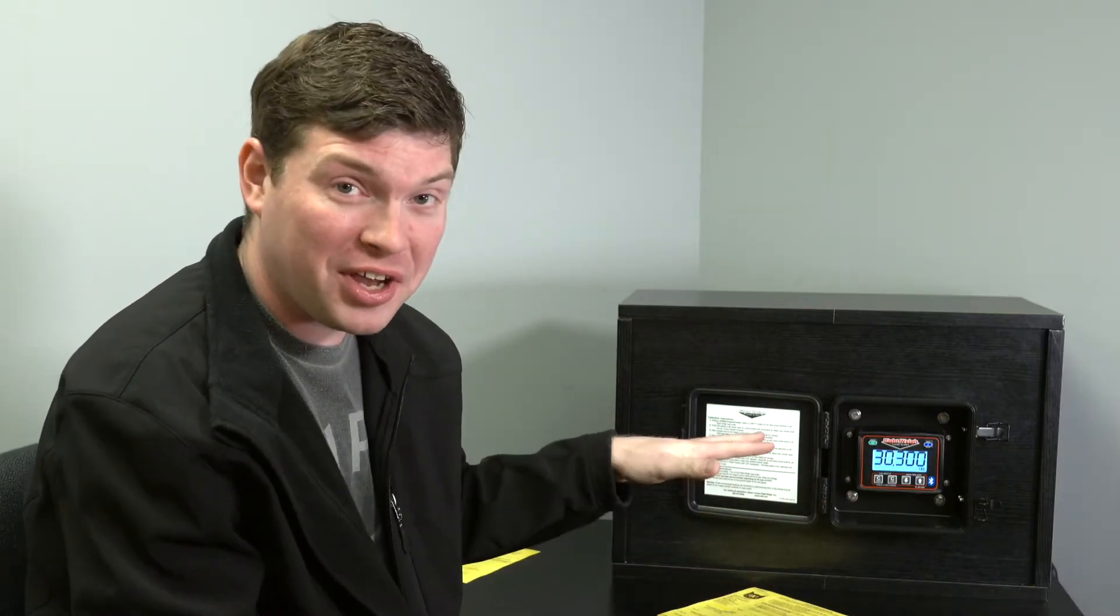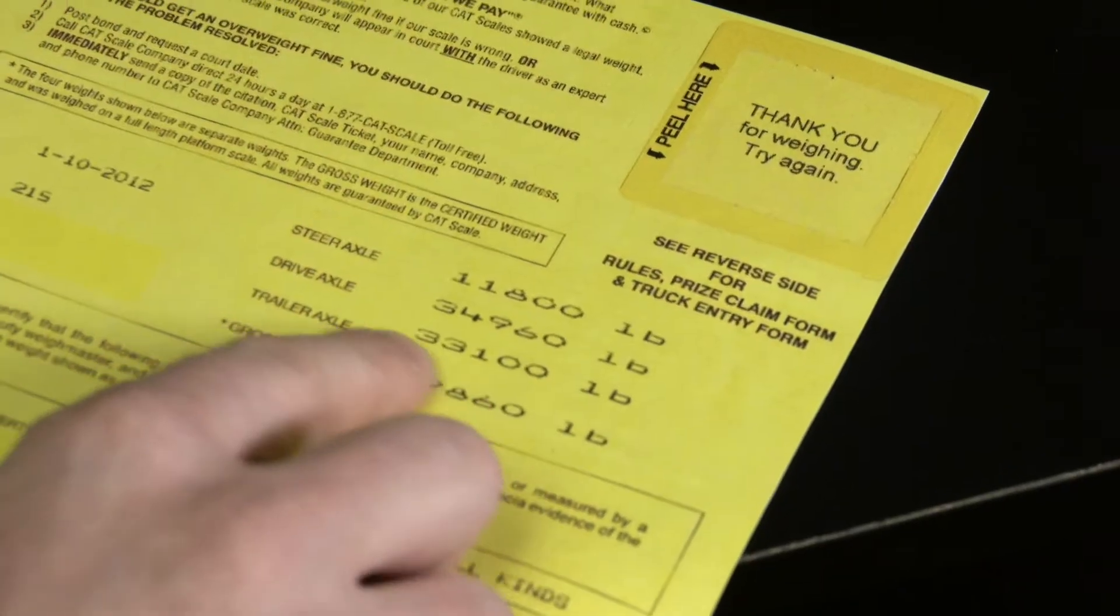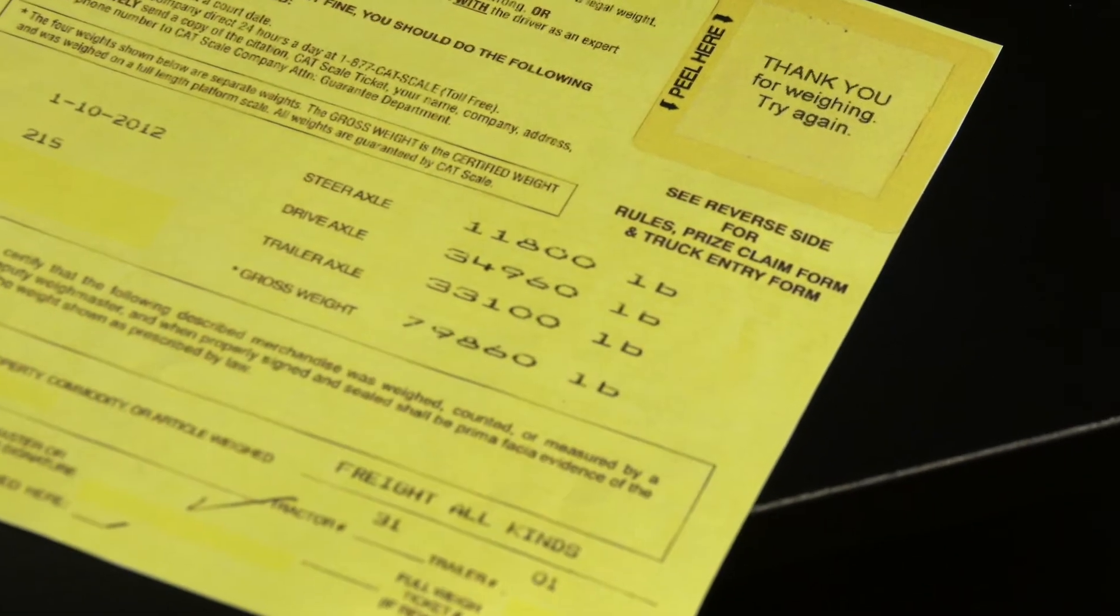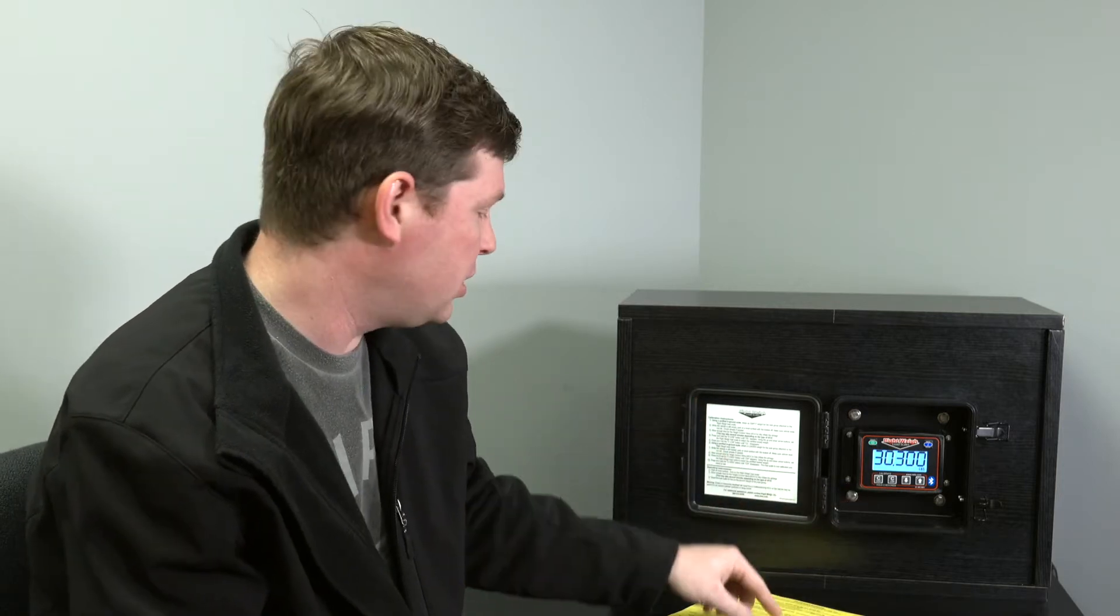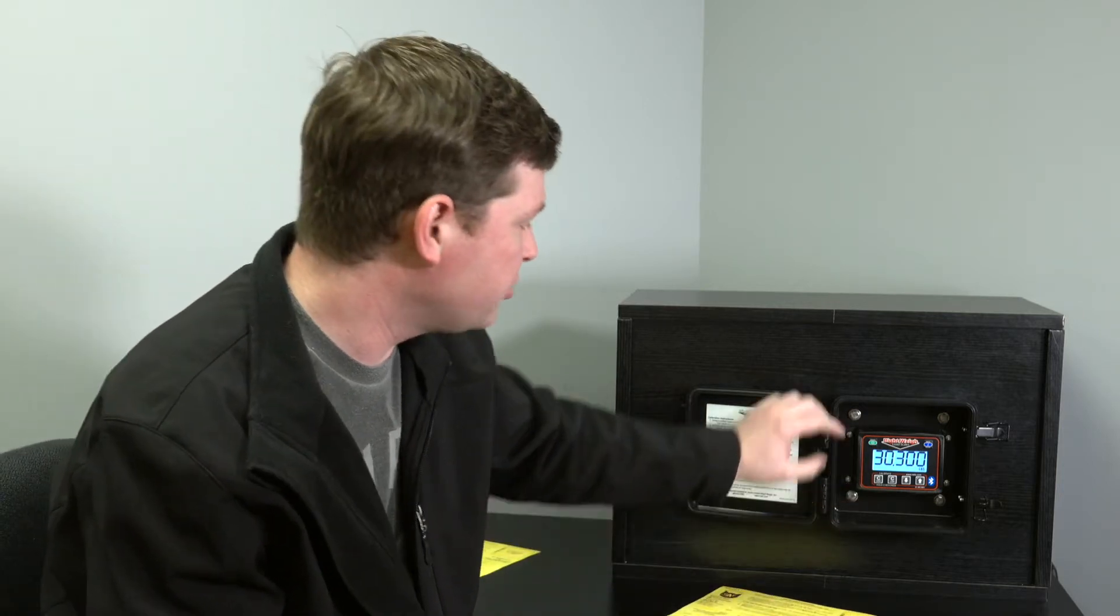But we've gone across the scale, let's say, and our trailer weight comes to 33,100. And so we need to do a cal high and we'll raise that value up to match our scale ticket for the trailer axle group.